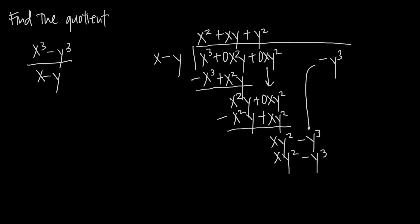The key point is: whenever you get to a term that matches the one from up top — a like term — you bring it down. But as long as the terms are not like terms, you continue adding zero placeholder terms in between. So we bring this like term down and subtract. Changing our signs and adding: xy squared plus negative xy squared is zero; negative y cubed plus y cubed is zero. We've gotten to a zero remainder, so we're done.